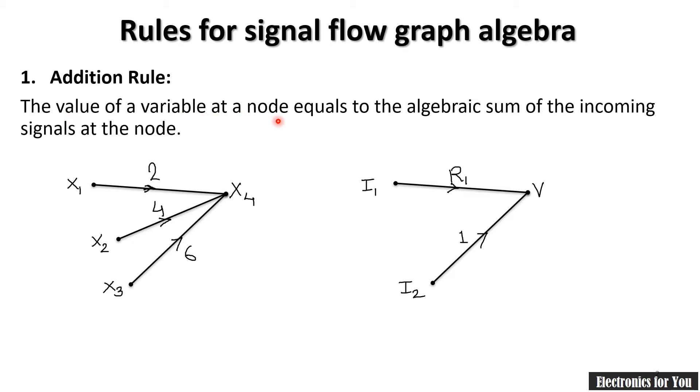The value of a variable at a node equals the algebraic sum of the incoming signals at the node. These are the incoming signals, and by addition rules we have to add them if they are coming toward the node.